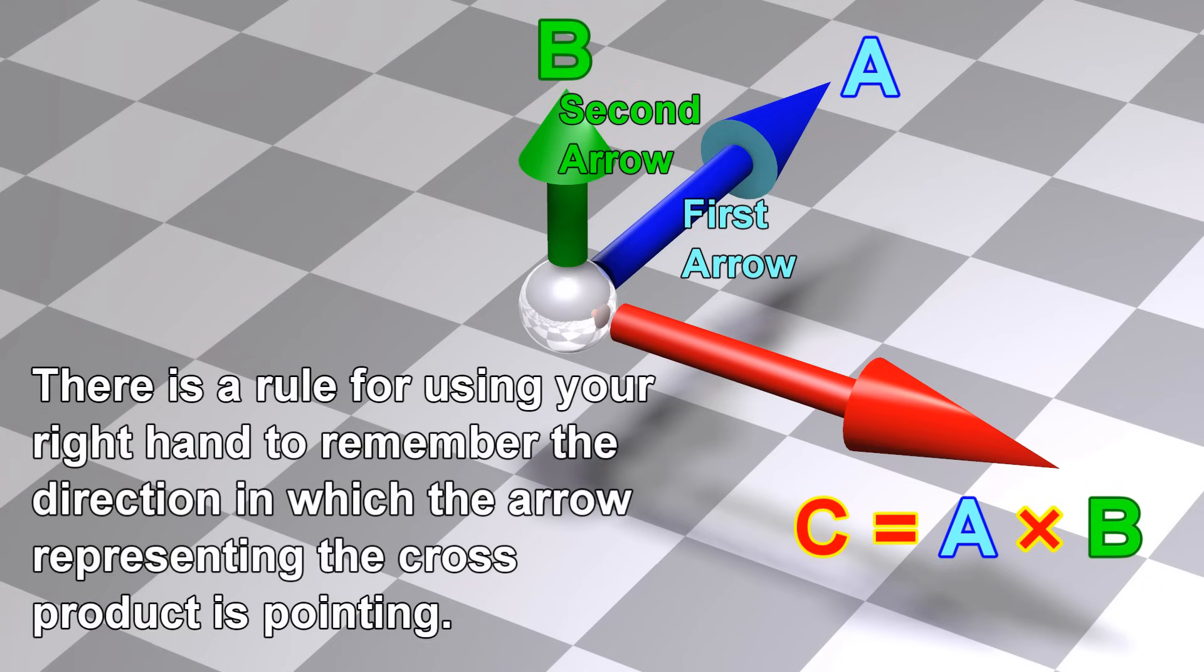There is a rule for using your right hand to remember the direction in which the arrow representing the cross product is pointing.